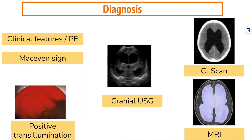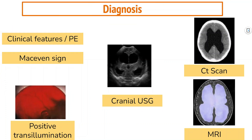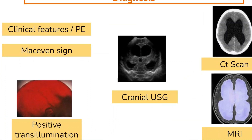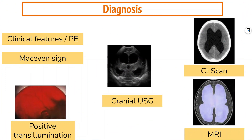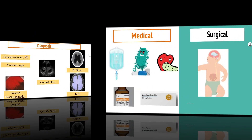Hydrocephalus is diagnosed through a clinical examination. Positive transillumination of the infant's head — in a dark room, the head of a newborn with possible hydrocephalus will light up when the procedure is done. Neuroimaging such as cranial ultrasound, CT scan, and MRI are also used.